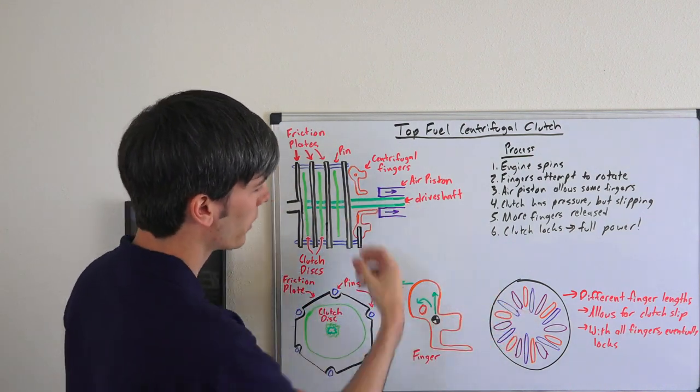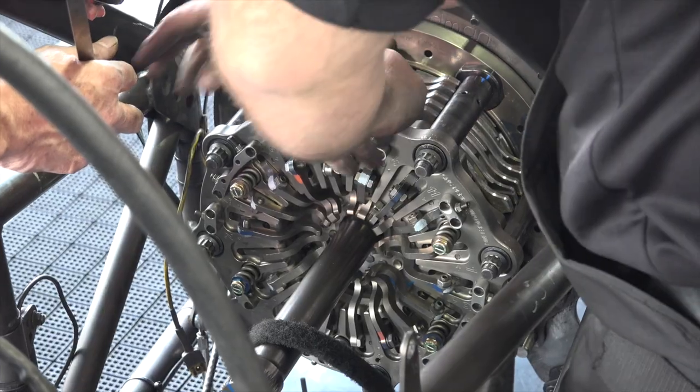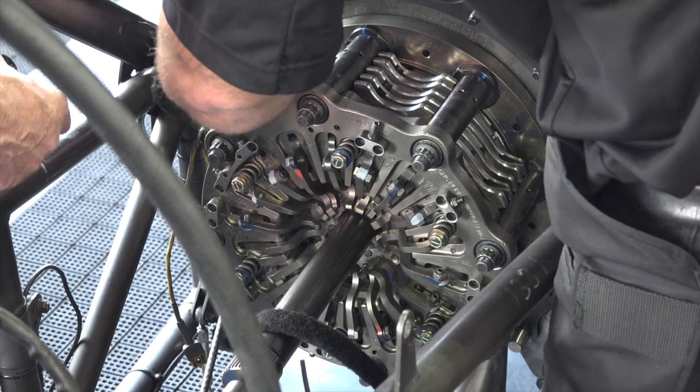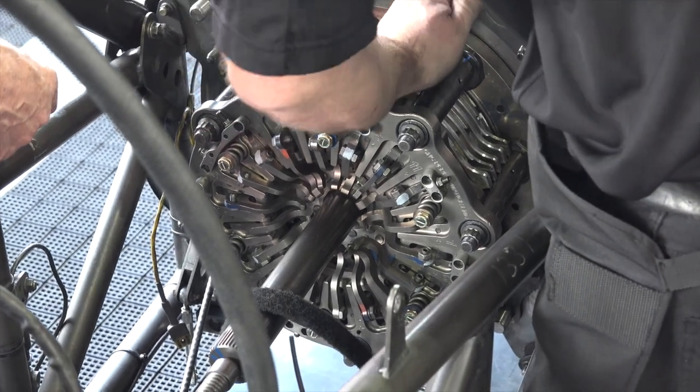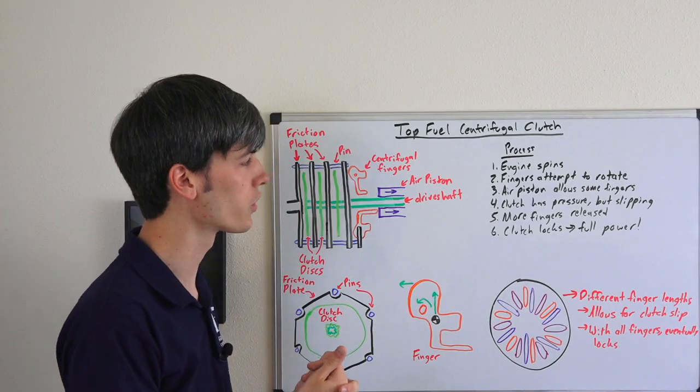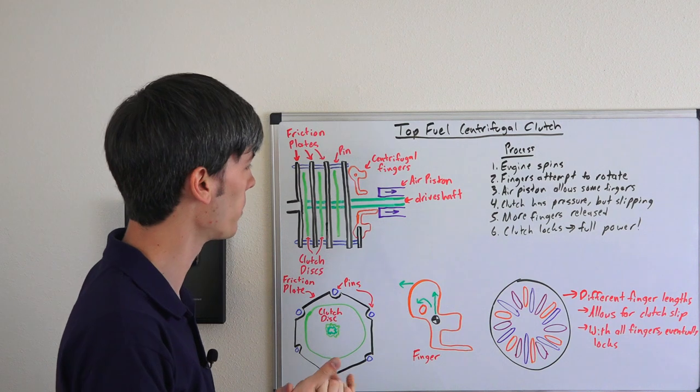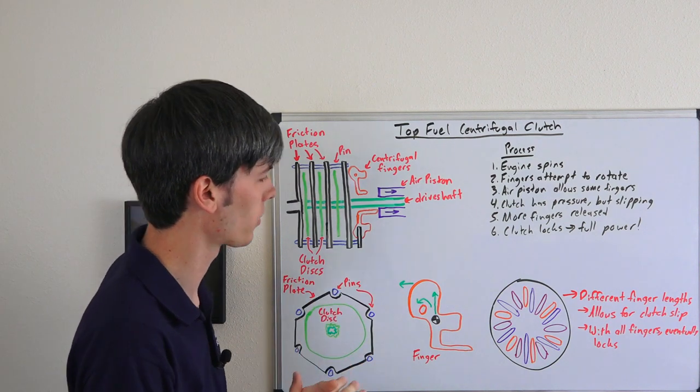Looking down on it from this side, it's going to look something like this where you have a bunch of different fingers all activated by this air piston. Some will activate earlier than others, and the reason you do that is simply to allow for clutch slip, as if you applied all of the engine torque right from the start you'd just spin the wheels, smoke the tires, and that would be it. You wouldn't be successful that run.